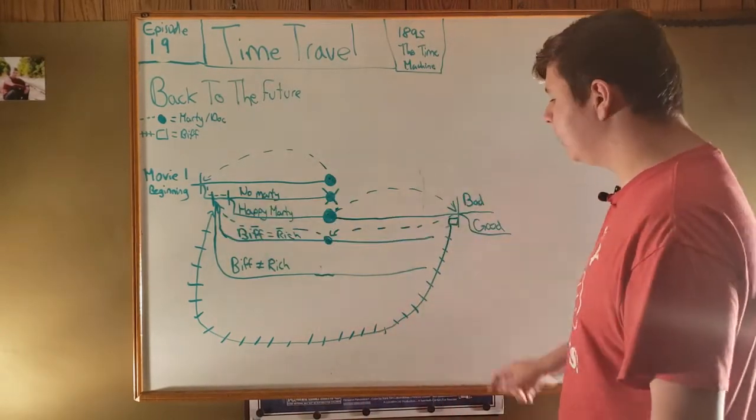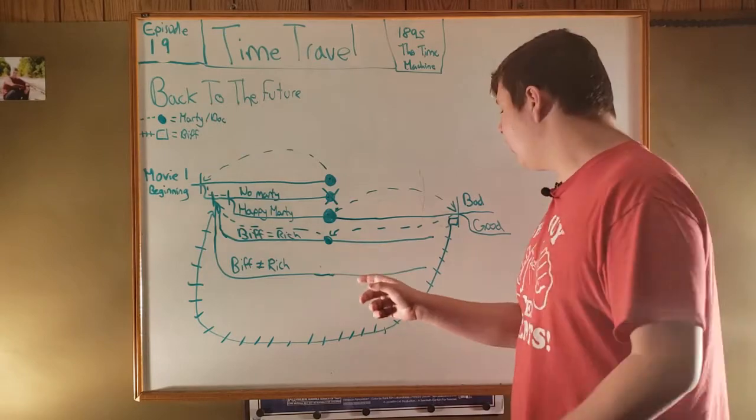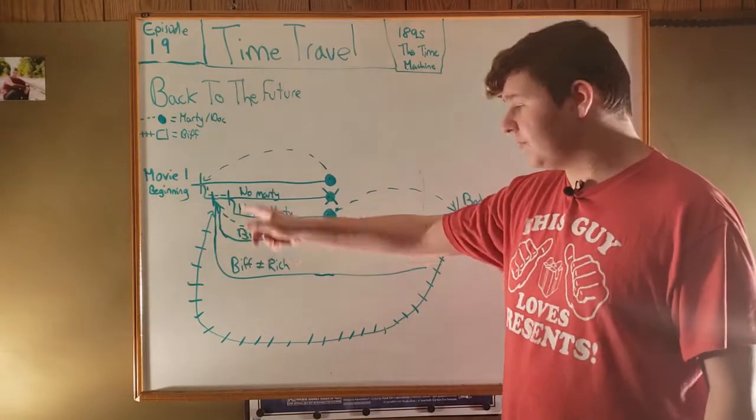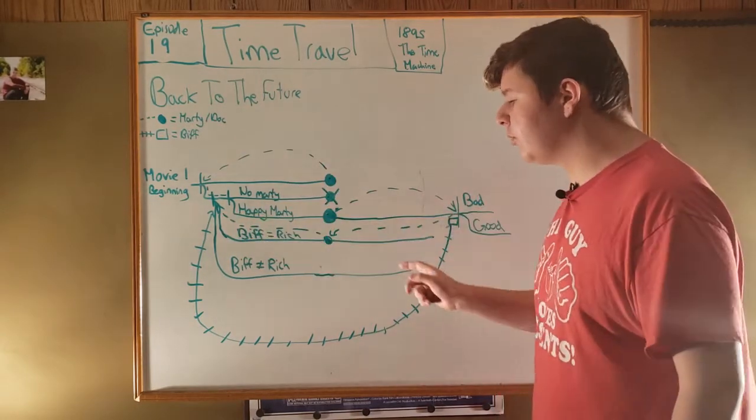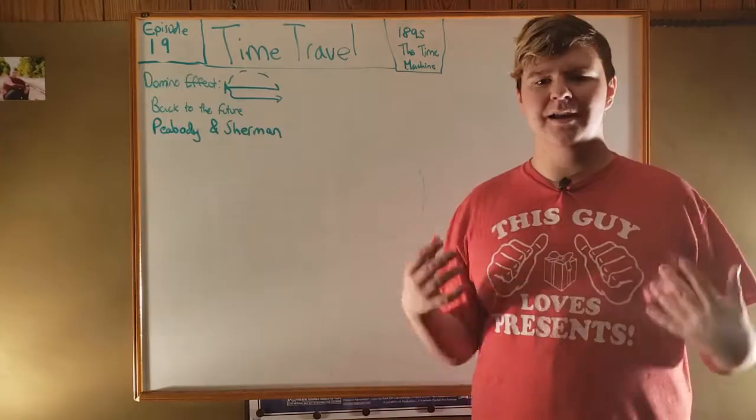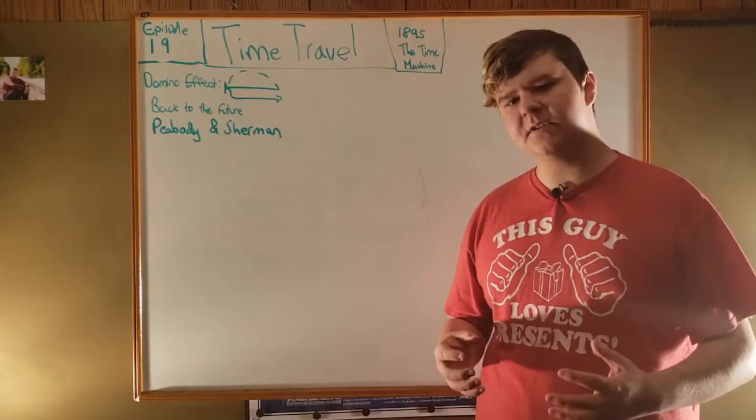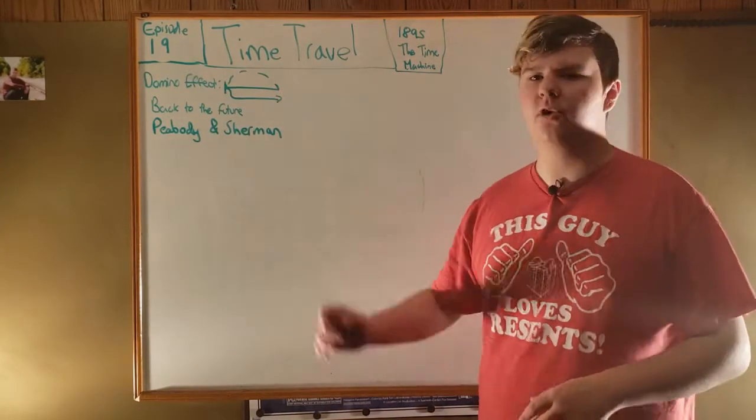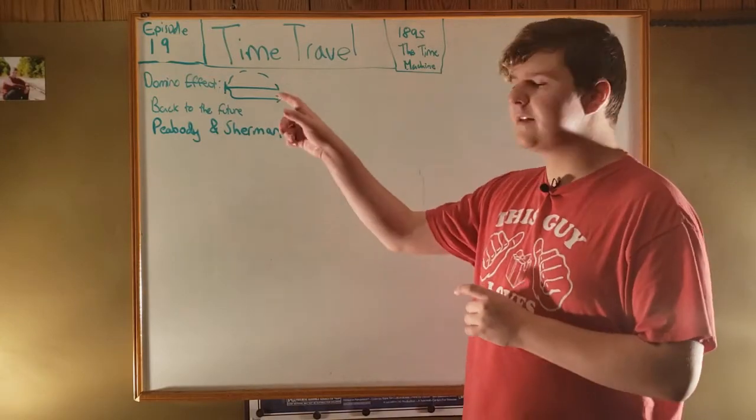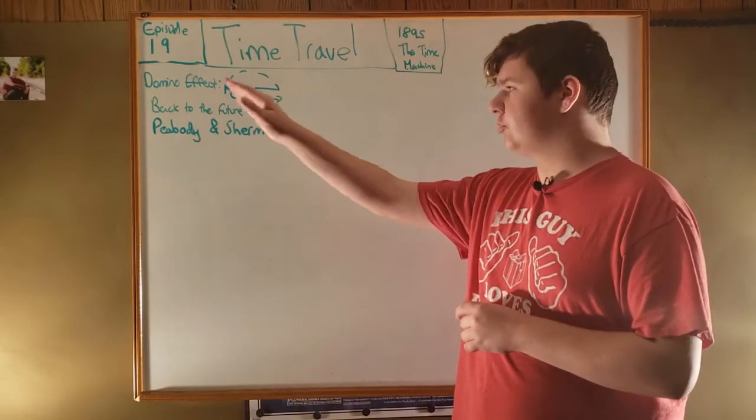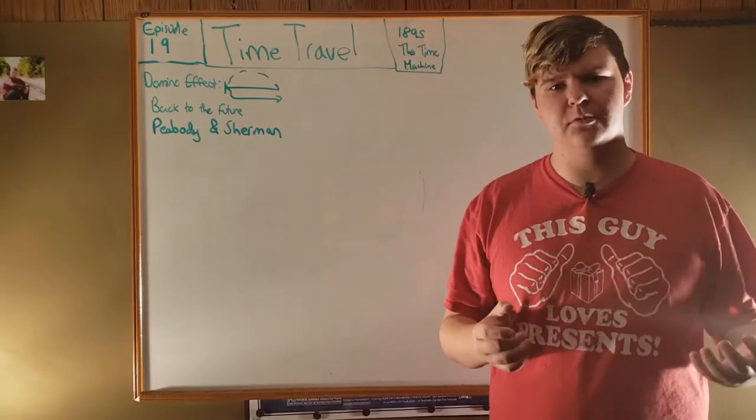Marty then has to go back in time to prevent that from happening in a world where Biff is not rich. This all comes together to create a type of time travel I like to call the domino effect time travel, where when you go back in time and change something, it alters the future through chain reaction.